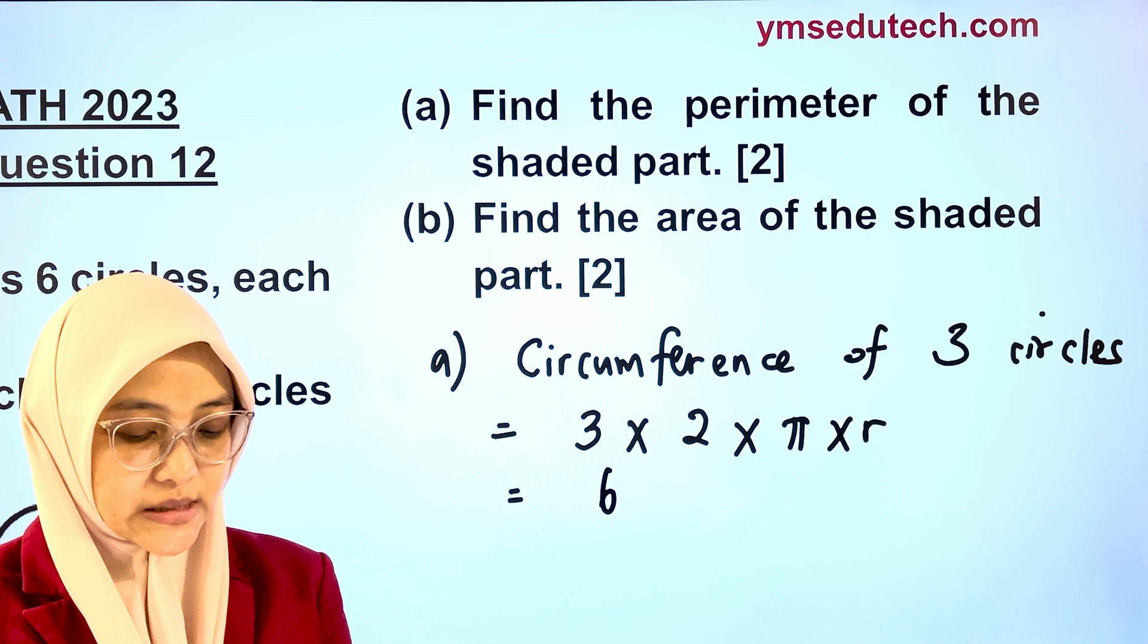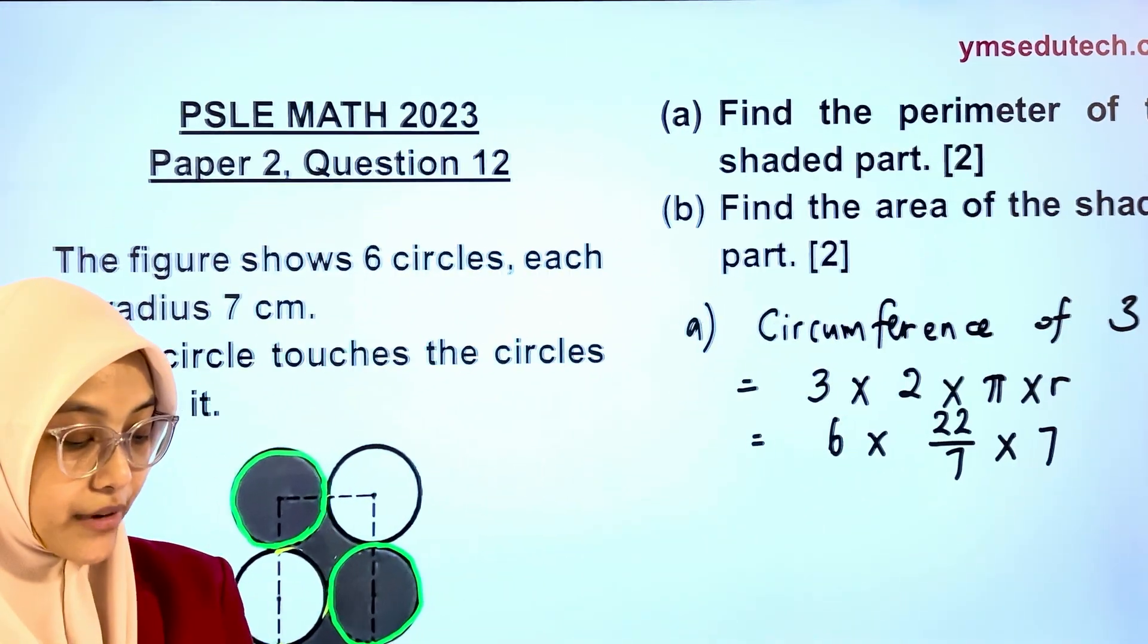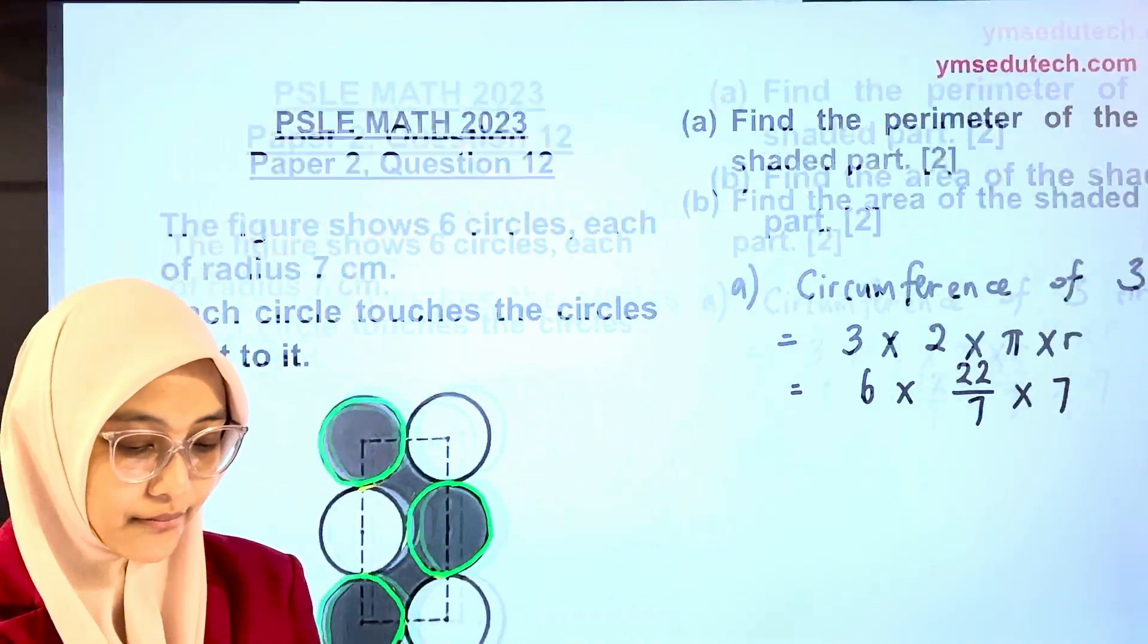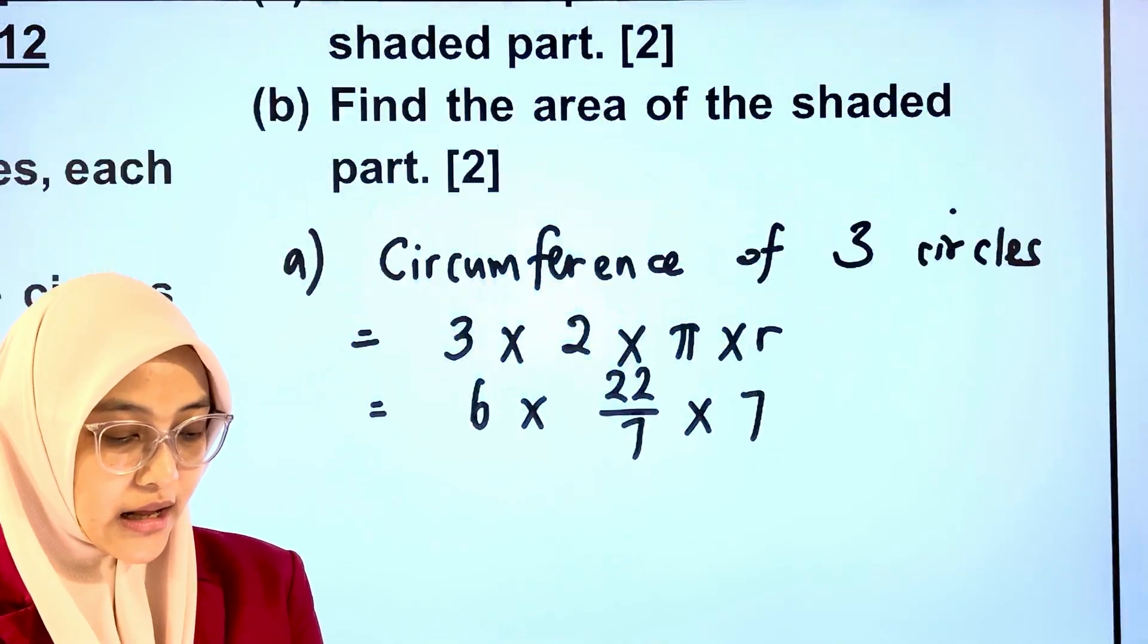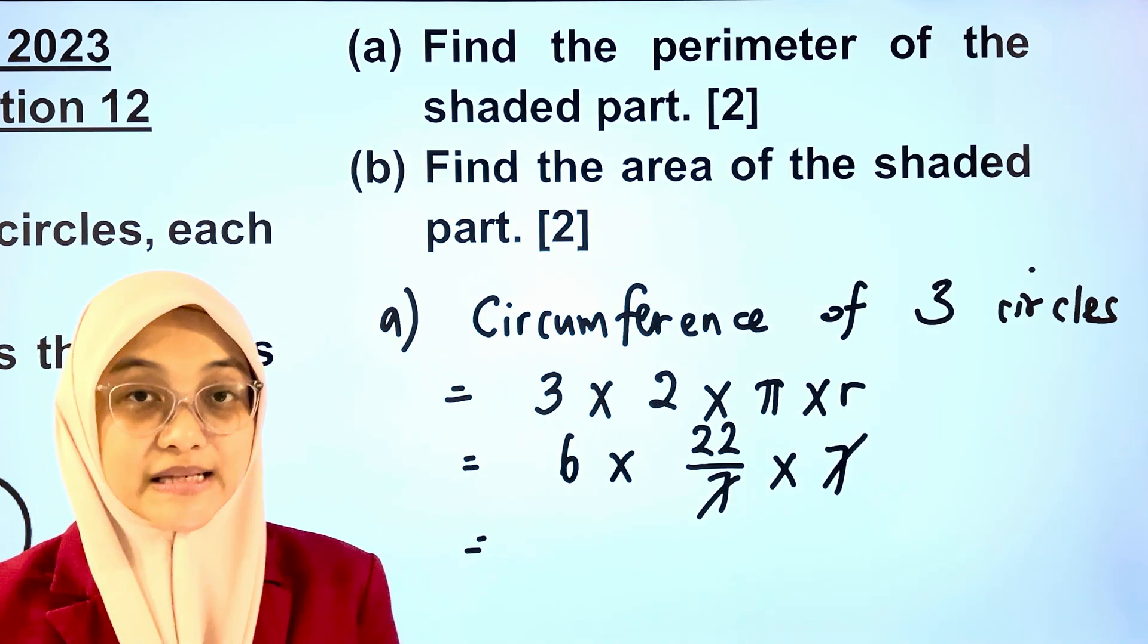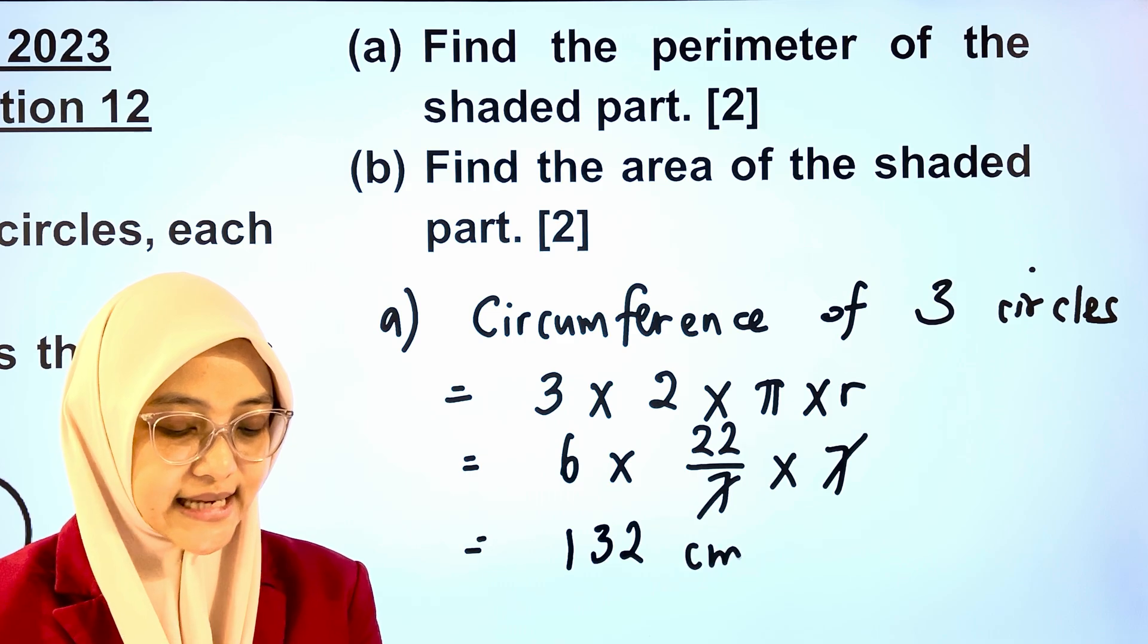Put in the values. 6 multiplied by 22 out of 7 multiplied by 7. Radius given, remember, radius given is 7 cm. Therefore, the perimeter of the shaded part is equals to 6 multiplied by 22, and that gives us 132 cm.